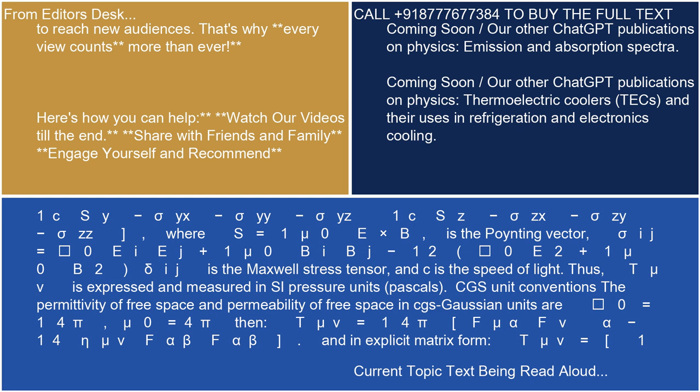2. Observable Universe: This refers to the portion of the universe that we can see from Earth. It is limited by the distance light has had time to travel since the Big Bang, approximately 13.8 billion light years in all directions.